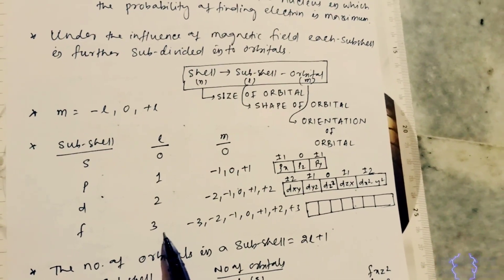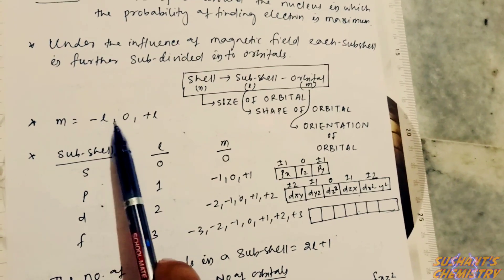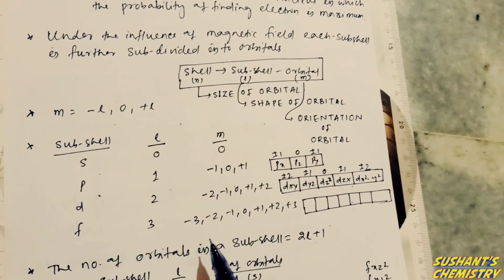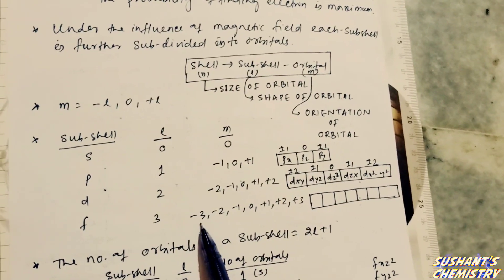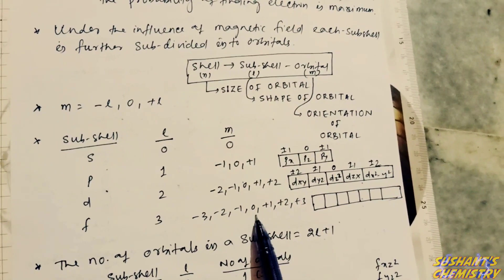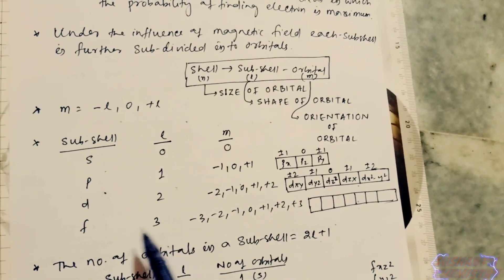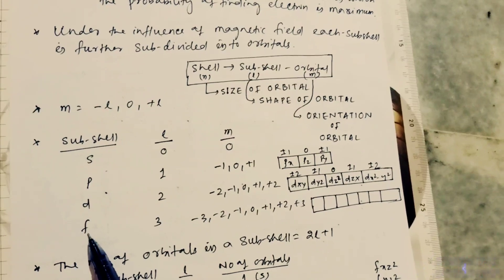For the f subshell, the value of l equals three. By putting the value three in the formula, we get minus three, minus two, minus one, zero, plus one, plus two, plus three — meaning the f subshell contains seven orbitals.